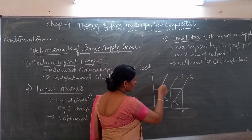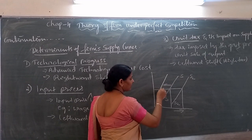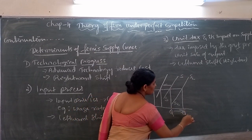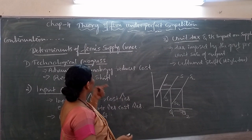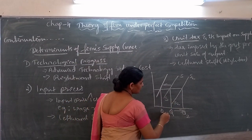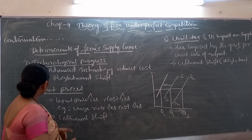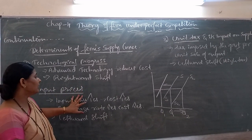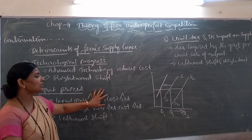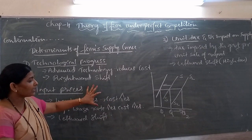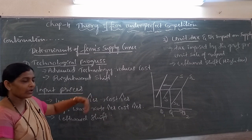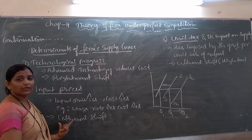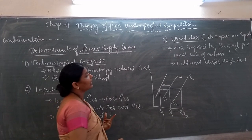So in that case, the supply curve shifts leftward with less supply. This is the original supply. The rightward shift is because of improvement in technological progress giving more supply. The leftward shift is because of increase in input prices giving less supply. So if there is an increase in the price of inputs or resources or factors, cost increases, then total output decreases and supply also decreases. Example is wage rate. So the supply curve shifts towards the left side.